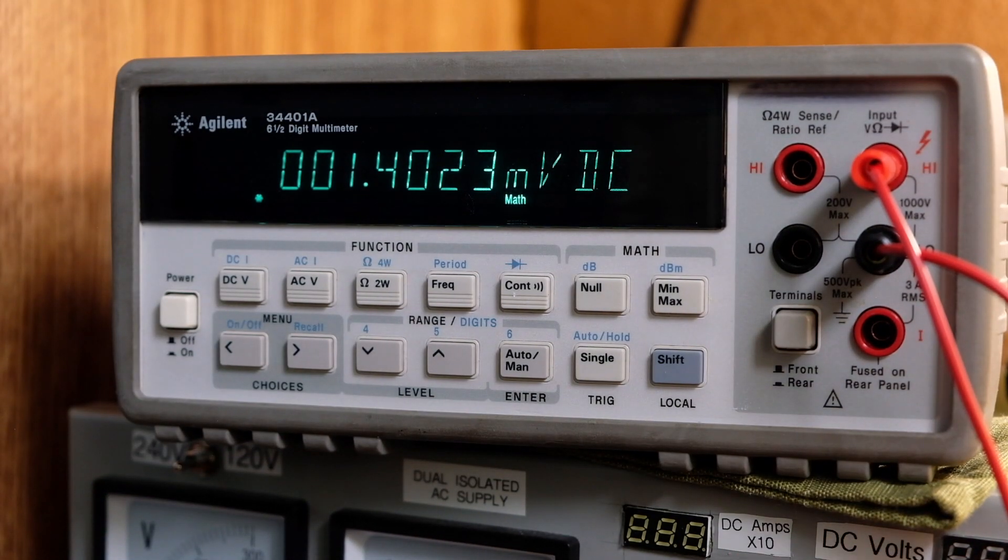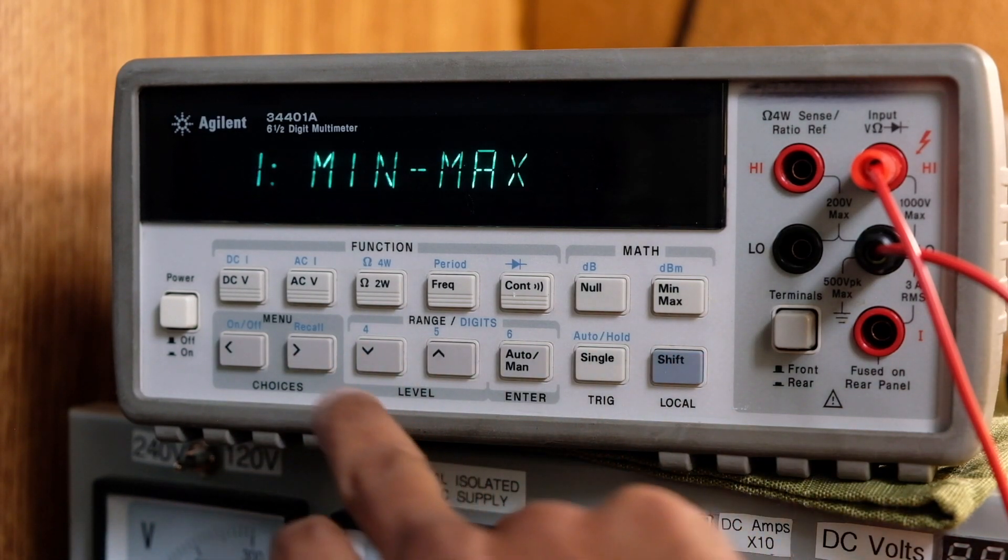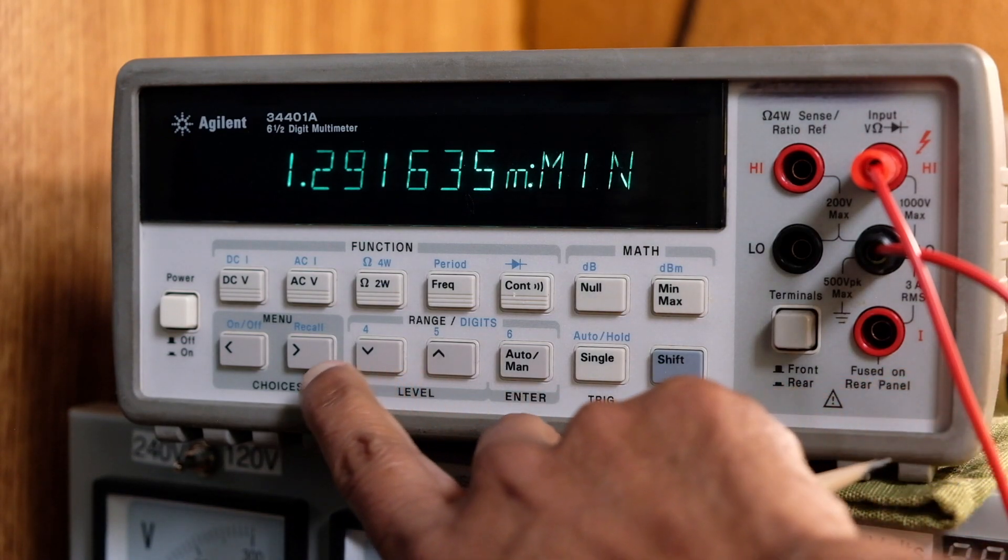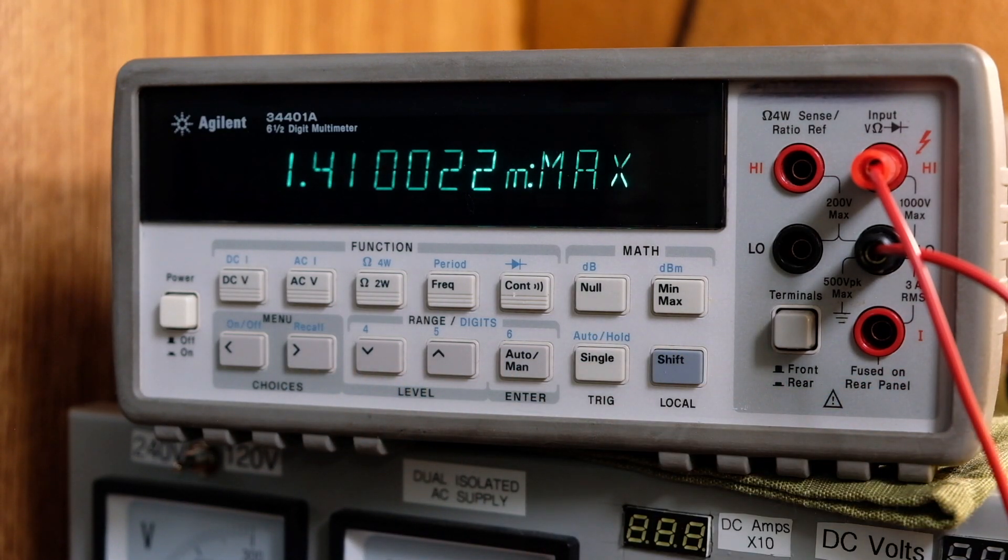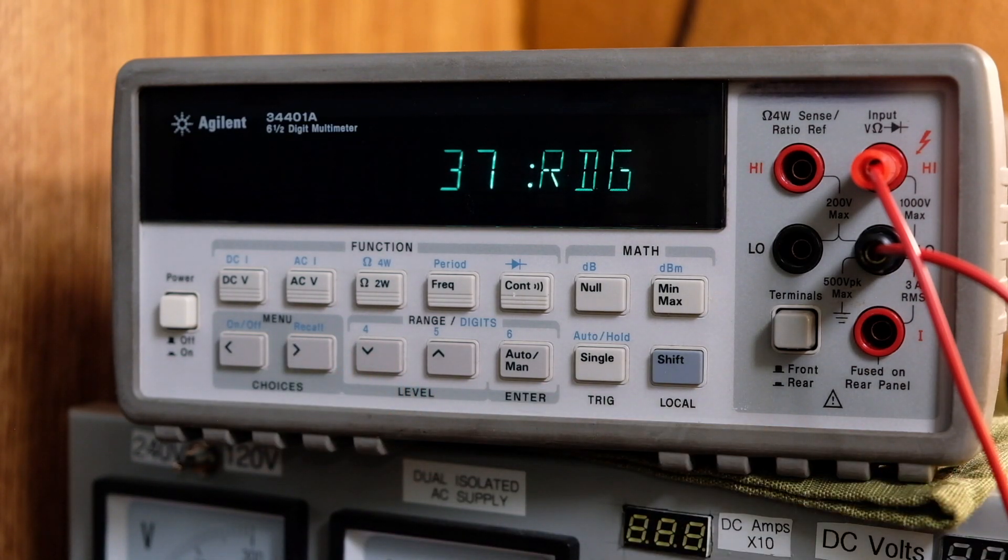Let's take a look at the readings I've got so far. So the minimum is 1.29164, maximum is 1.41002, average 1.36148 millivolts or milliohms, and I have 37 readings.